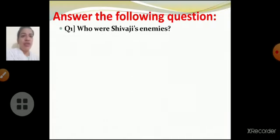Now answer the following question. Your first question, who were Shivaji's enemies? Now you have to answer based on previous chapter. Yes. Mughals, Adil Shah, Siddhi of Janjira, Portuguese and so on. Very good.